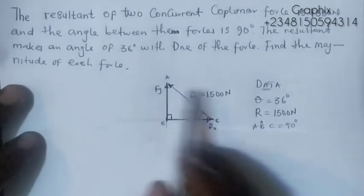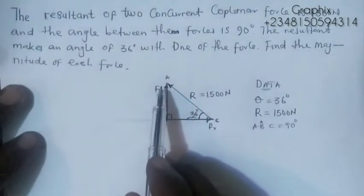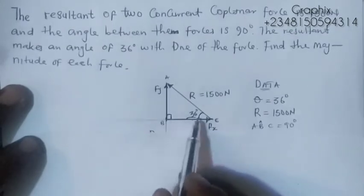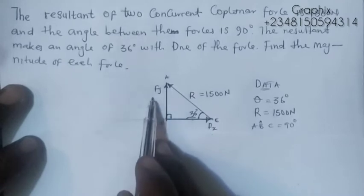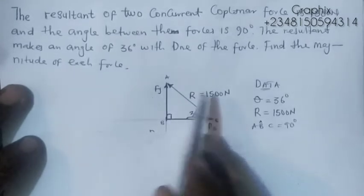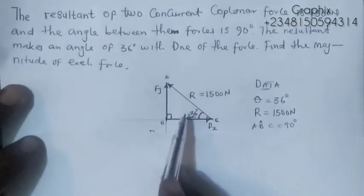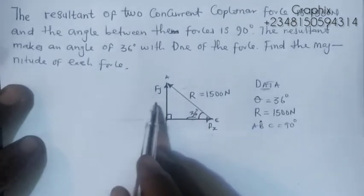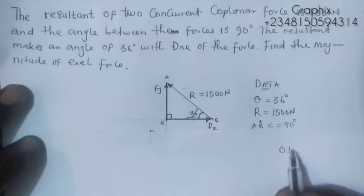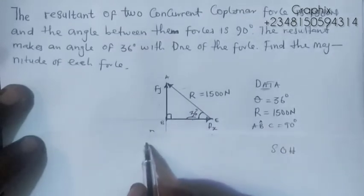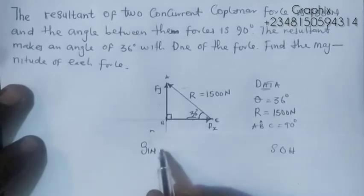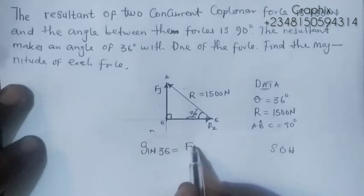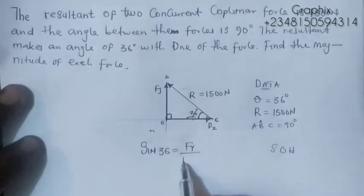To find Fy, we connect Fy and R because we know R but not Fy. The resultant R is the hypotenuse and Fy is the opposite side. What connects opposite and hypotenuse is sine, so: sin(36°) = Fy / 1500.